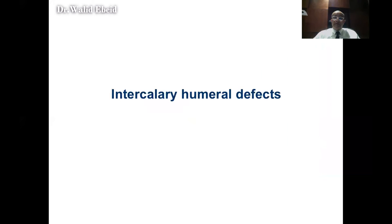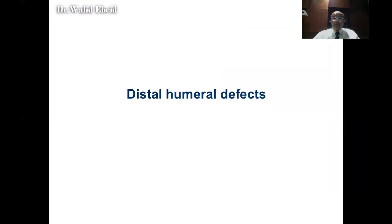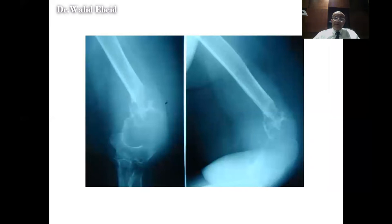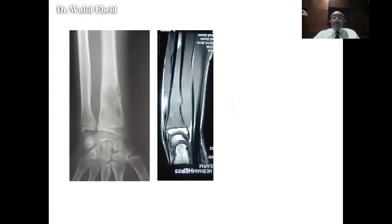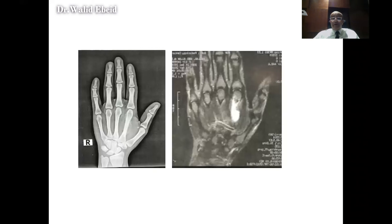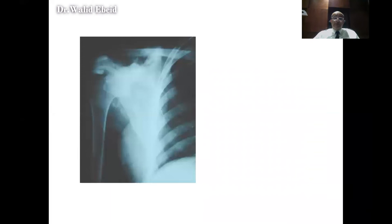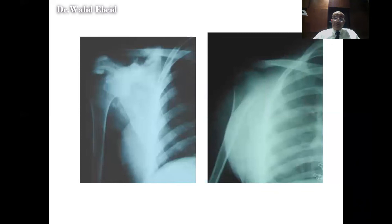Intercalary humeral resections are usually reconstructed with vascularized fibular graft. Distal humeral defects — such as in a patient with metastatic thyroid cancer — are reconstructed with a modular prosthesis. For distal radial reconstruction, we usually use non-vascularized fibula with wrist fusion. A Ewing sarcoma of the metacarpal can be resected and reconstructed with recycled metacarpal bone. Following scapulectomy for malignant tumors, no reconstruction is typically done — the humerus is suspended to the clavicle or chest wall.